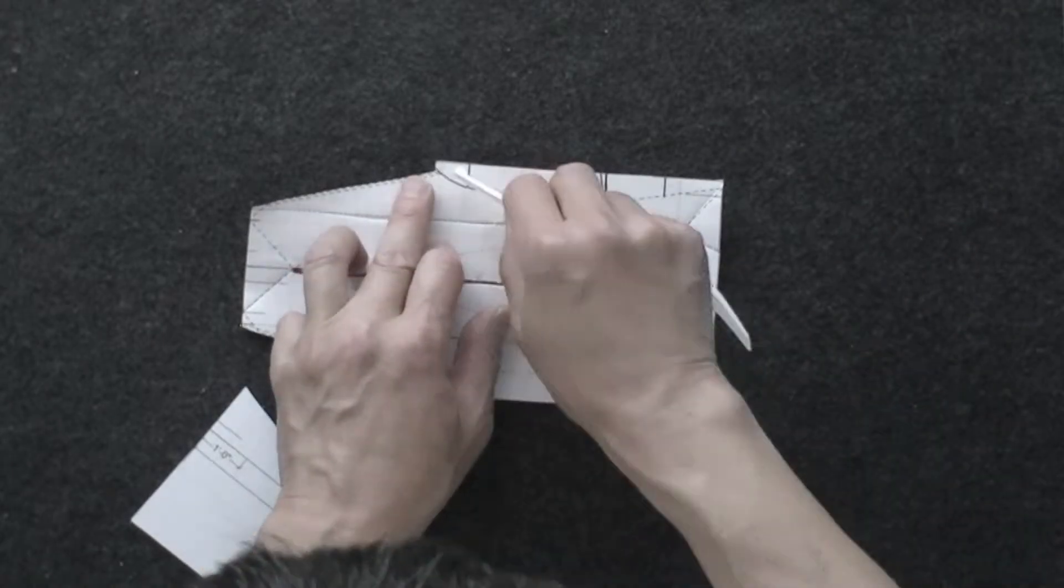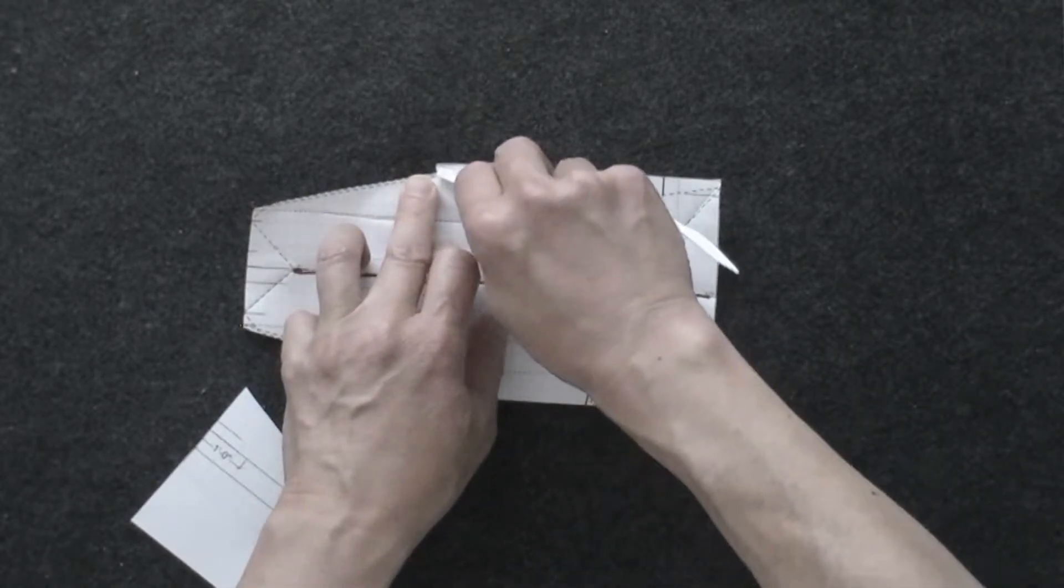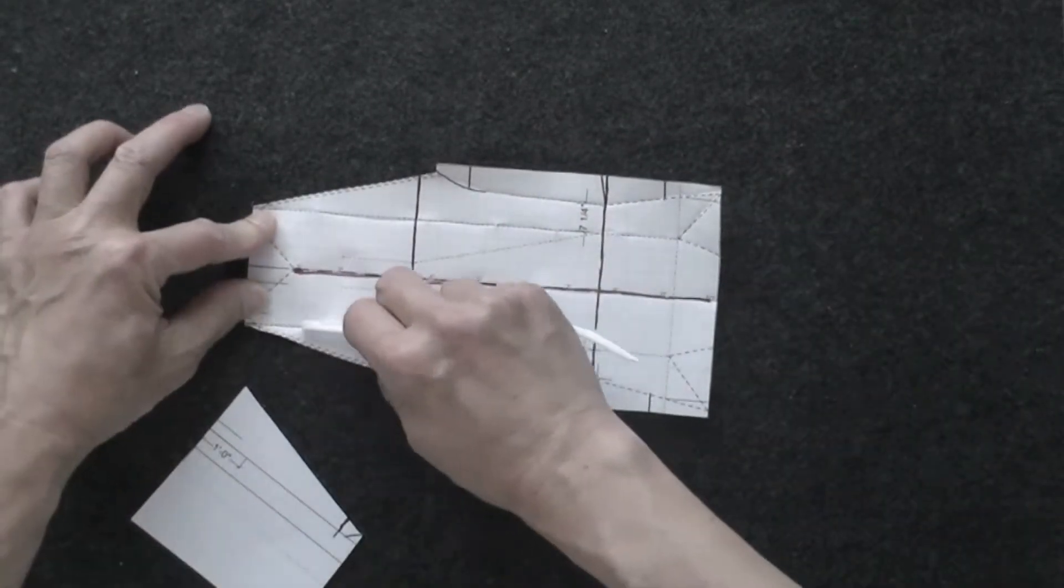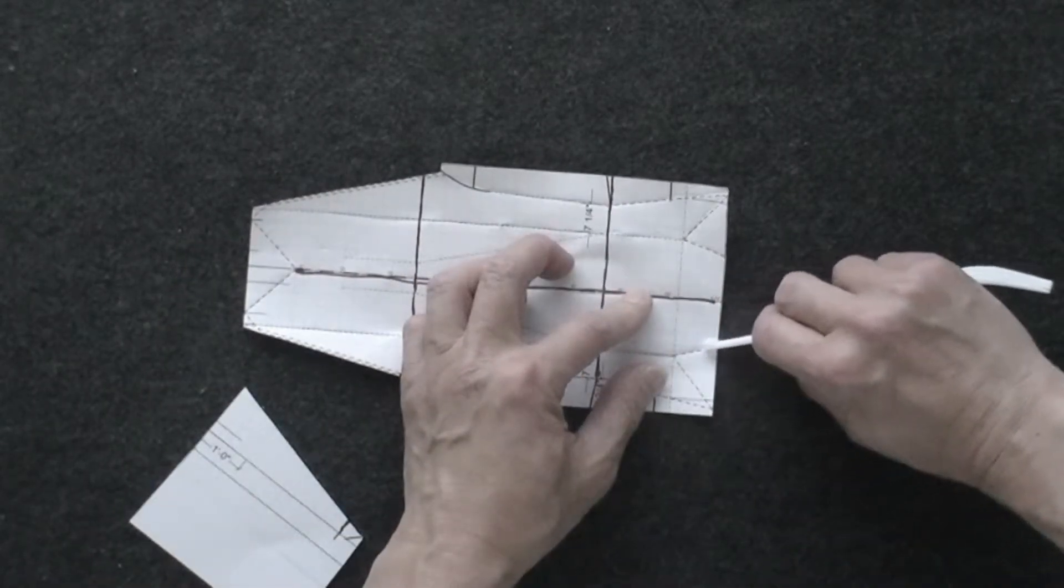This curve, you may go with a straight line, because it's very difficult to do a curve. Watch out at this point. Don't go all the way. You have to follow the dotted line.